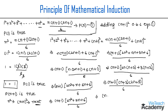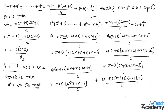We can rewrite this as (n+1) · (n+1+1) · (2(n+1)+1) / 6, which is exactly the formula P(n+1). Therefore we can say that P(n) being true implies P(n+1) is true.